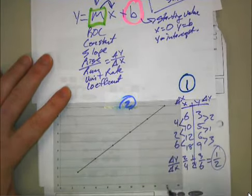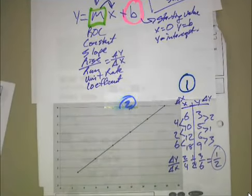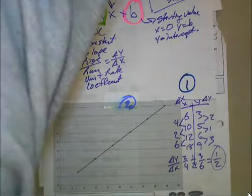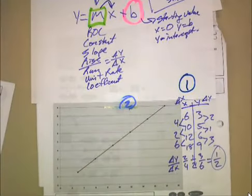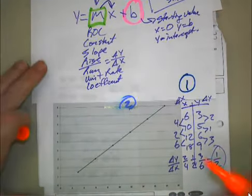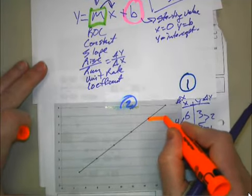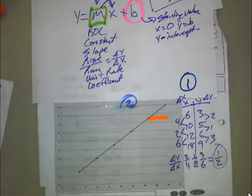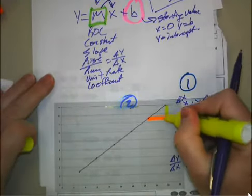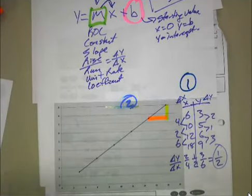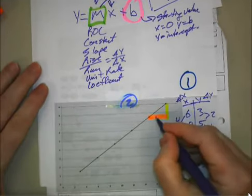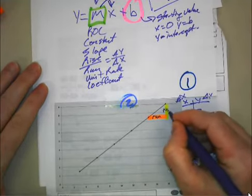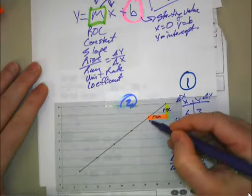The second way to find our delta Y over our delta X is to examine a slope triangle. To examine a slope triangle, we're going to look at the change in X and the change in Y. And this slope triangle, the flat part of the stair is called the run, and the vertical part of the stair is called the rise.